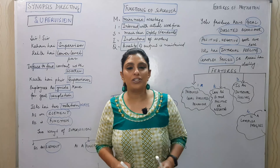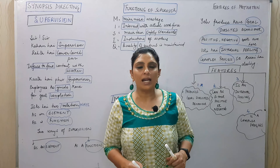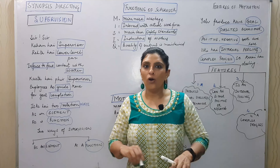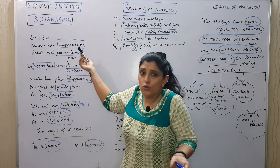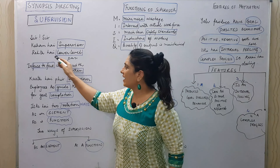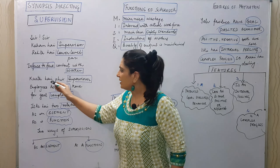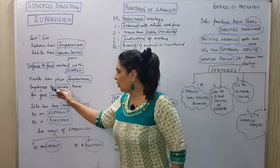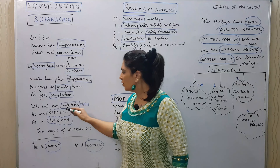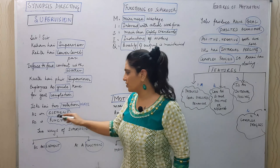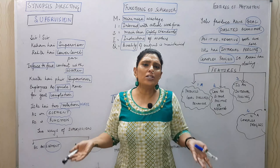Next we start with supervision. What is supervision, who is the supervisor, and at what level does he work? The supervisor stays at the lower level, in face-to-face contact with workers. He does supervision by guiding employees for goal completion. There are two ways of supervision: as an element and as a function. That's all in supervision.